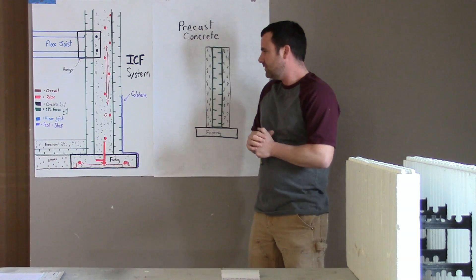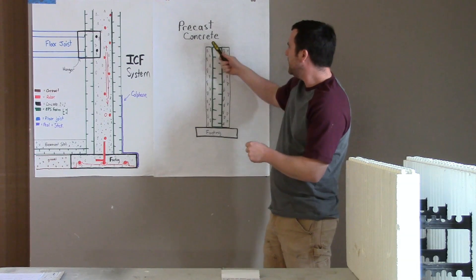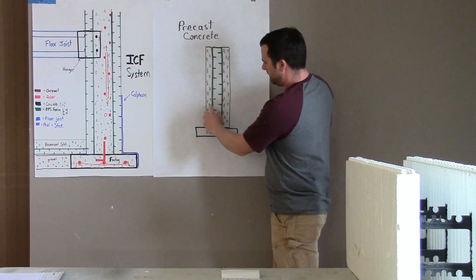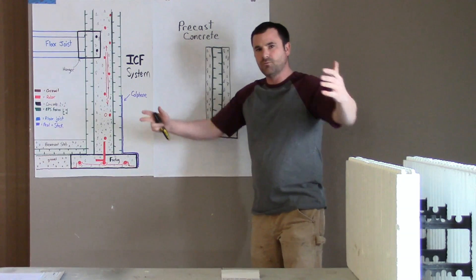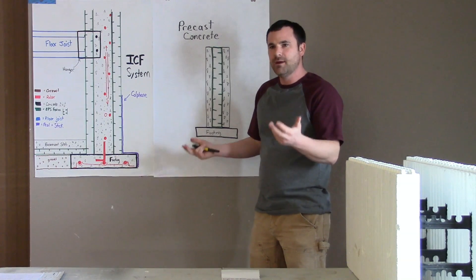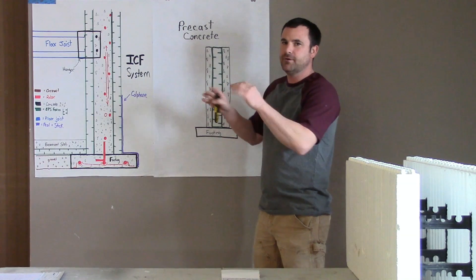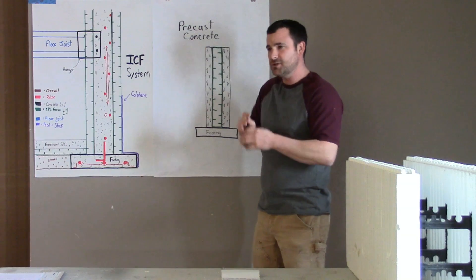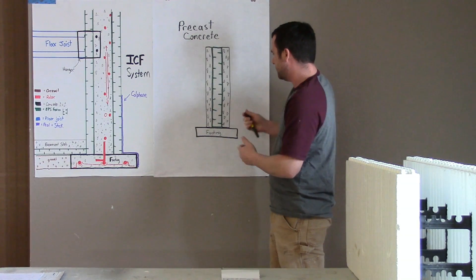With precast concrete, they pour these giant slabs of wall concrete in a big warehouse or shop. Everything's pre-figured out, they bring them out, they land them on a footing, you can land trusses on it - it's all good. It's a panel system - concrete with rebar and all that for strength, then foam on the inside, concrete on the other side.